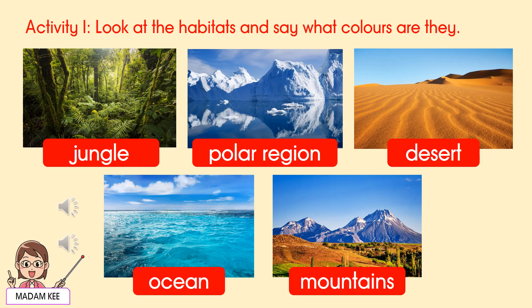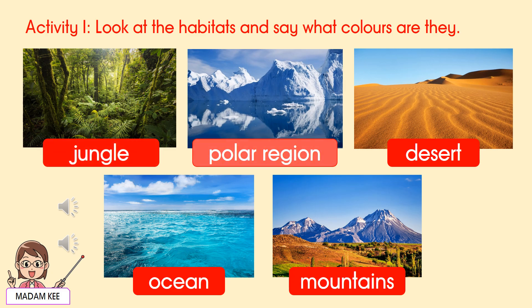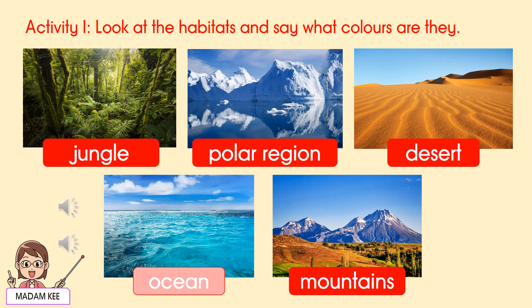Activity 1. Look at the habitats and say what colours are they? Jungle. Polar region. Desert. Ocean. Mountains.